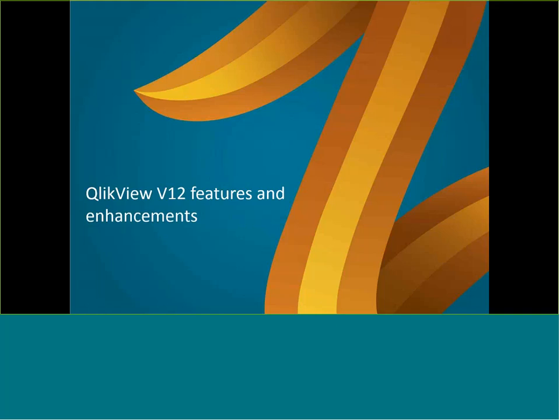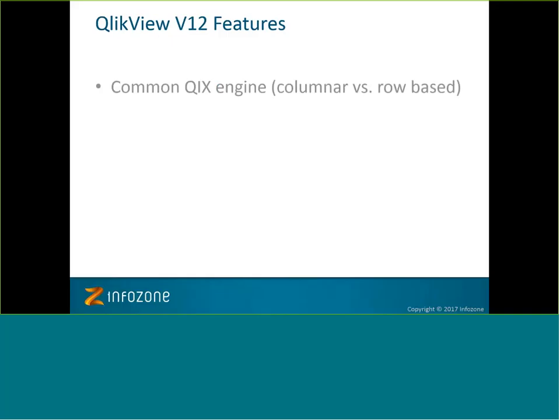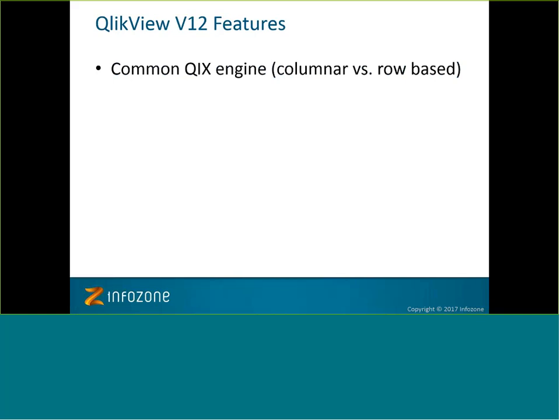As far as QlikView 12 features are concerned, the biggest feature you'll hear everyone talking about is the common KIX engine — common meaning shared between QlikView version 12 and Qlik Sense. The KIX engine is the back-end engine for how QlikView works as far as associative logic, making selections, and processing. The major difference is columnar versus row-based storage. If you're interested in more detail, you can look up one of my past webinars where I gave a fairly detailed explanation of what this means and how it works.